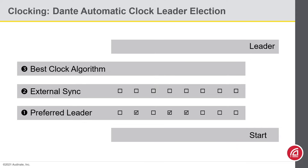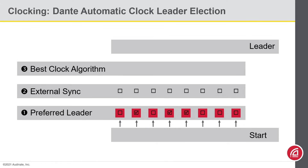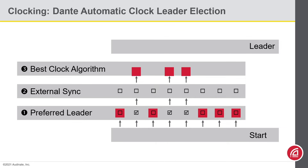What happens if no devices are chasing external clock? The first step runs as normal — three devices are selected as preferred leader, so they move ahead in the election process. When we ask if anybody's chasing external clock, no one is. If we end up in a situation where all candidates would be eliminated on a particular step, we instead pass all of those to the next level. Finally, the best clock algorithm chooses one leader out of the remaining candidates.